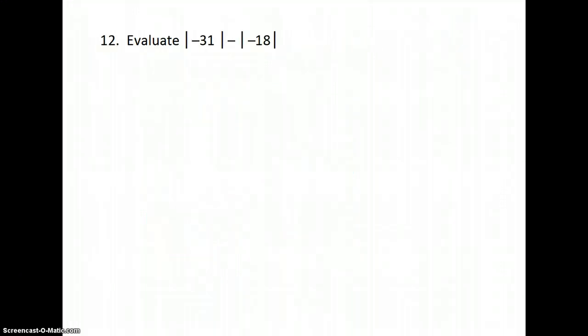The next one, evaluate absolute value of -31 minus the absolute value of 18. Stop, go back. So I want you to start by writing the original problem and evaluating the absolute value. So the absolute value of -31 is 31. I've got to keep this sign, and then the absolute value of -18 is 18. And then 31 - 18 is 13, and that's your answer.